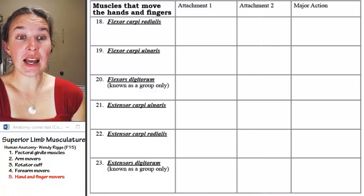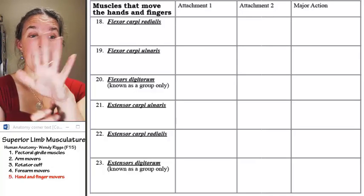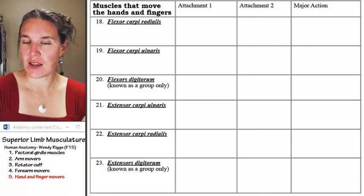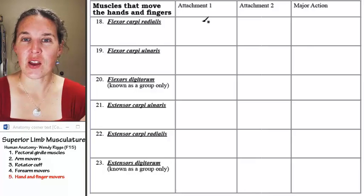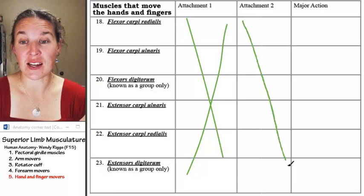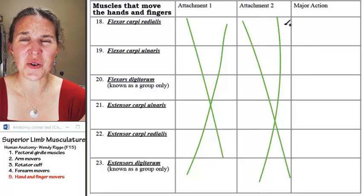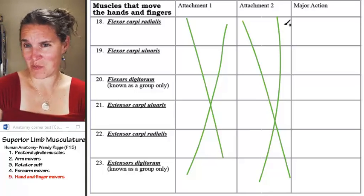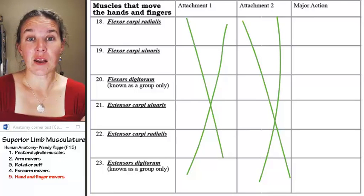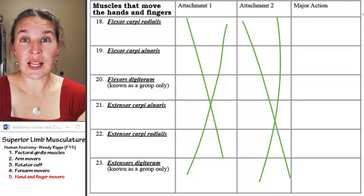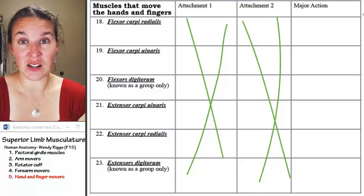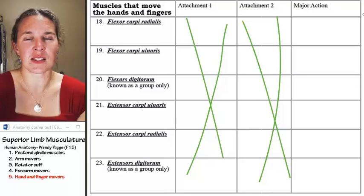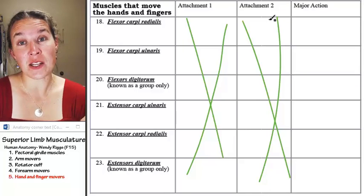Alright, our last group. These guys move the hand at the wrist joint, and some of them move the digits. Here's the good news. We are not doing attachments for any of these guys. Some of the attachments are cool, and I get really excited because I've learned some of the attachments and it makes me happy and I want to brag because I know some stuff. But you will have to identify these guys on our cadavers, so you will have to orient yourself to where they are, which, that's plenty. And then you do have to know their major action.